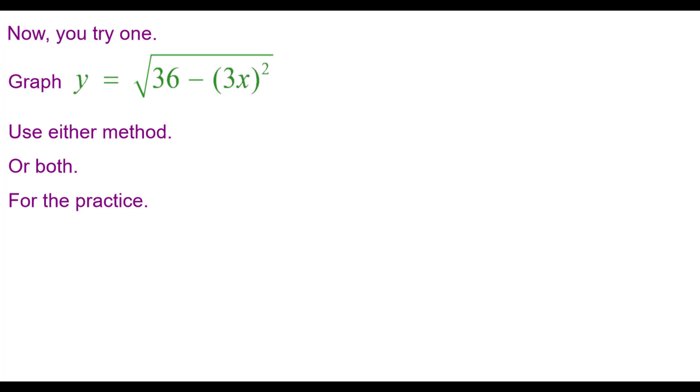Now you try one. Graph y equals the square root of the quantity 36 minus the quantity of 3x squared. Use either method or both for the practice. Press pause to do this and then resume when you're finished to check your answers.